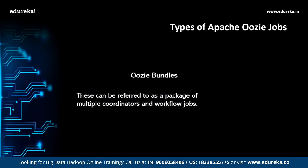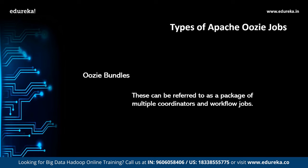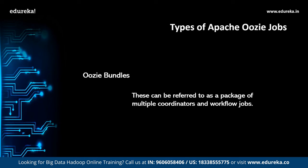Followed by coordinator jobs, we have the Oozie bundle. The Oozie bundle system allows you to define and execute a set of coordinator applications, often called a data pipeline. In an Oozie bundle there is no explicit dependency among the coordinator applications; however, you could use the data dependency of coordinator applications to create an implicit data application pipeline. You can start, stop, suspend, resume, and rerun the bundle. The most important term to understand about Oozie bundle is its kickoff time — the time when the bundle should start and submit coordinator applications.